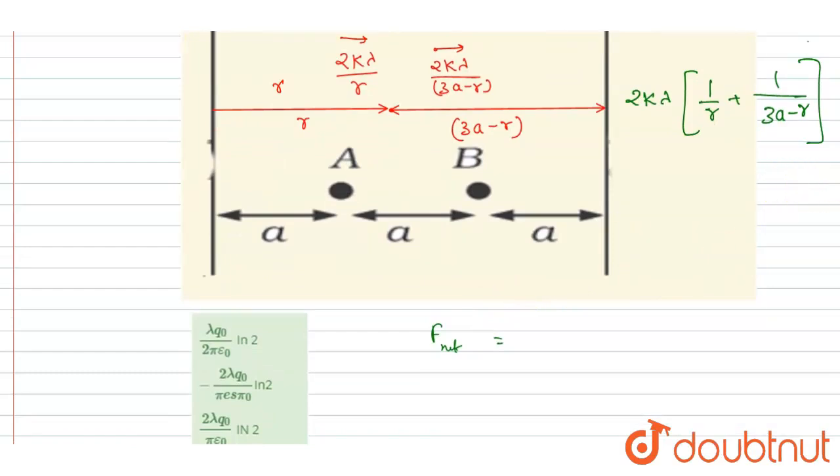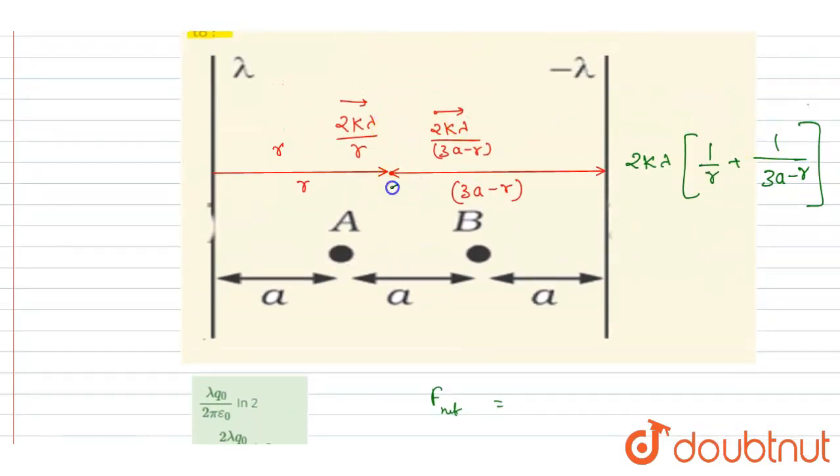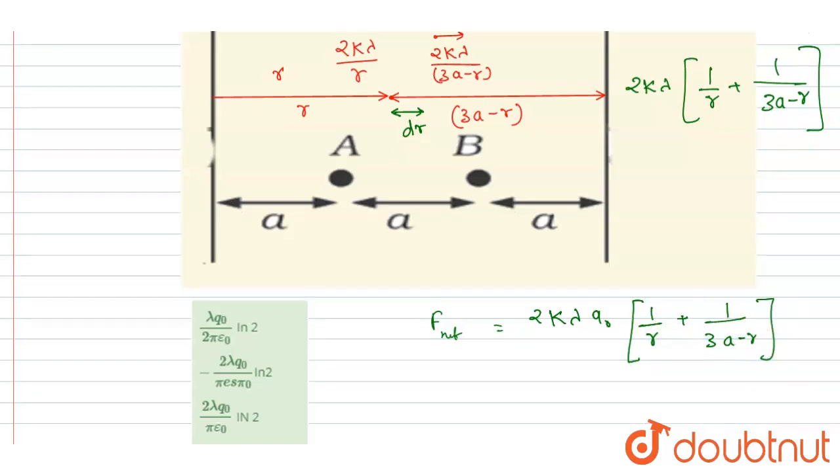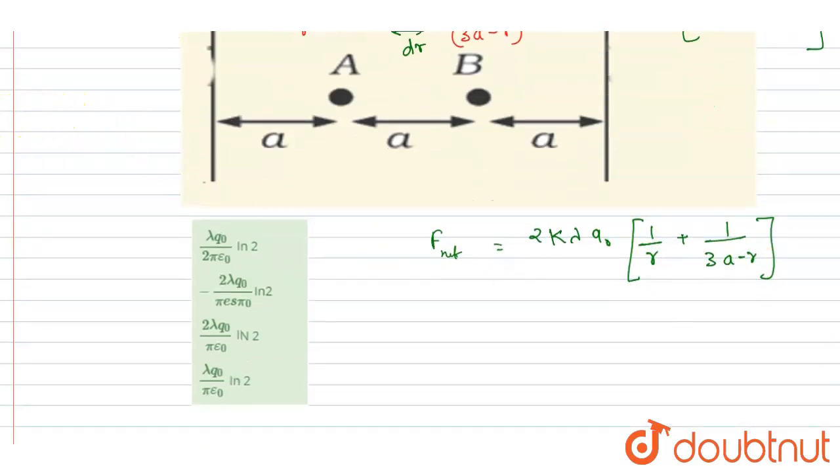And let's say we shifted this particle from this position by a distance dR. If you see, let me write down the force. It is 2k lambda Q naught. And this expression, now if I see the work done here, for small displacement, it is F net times dR.